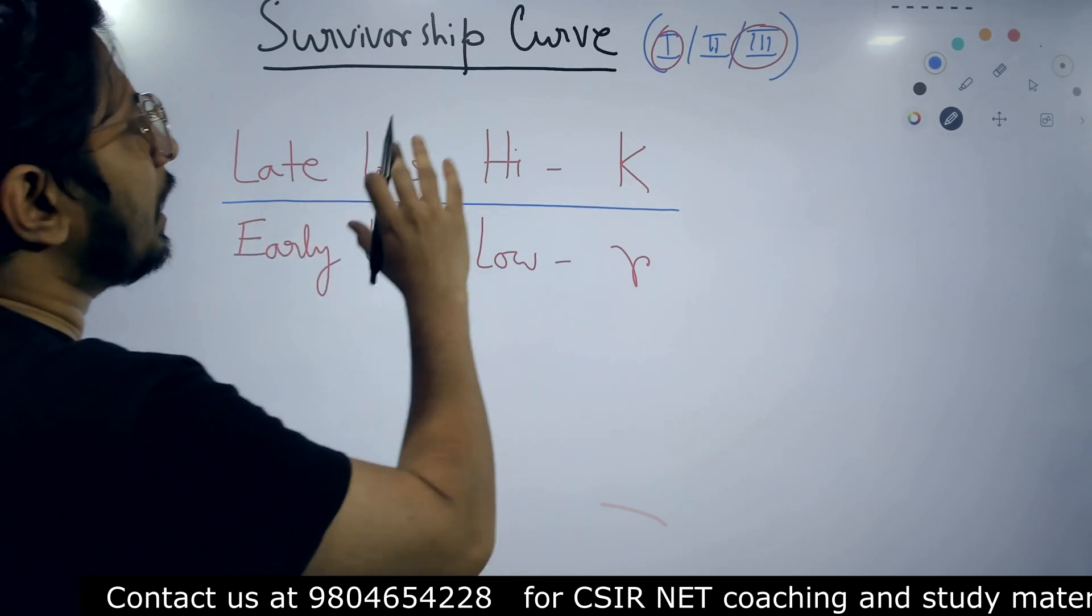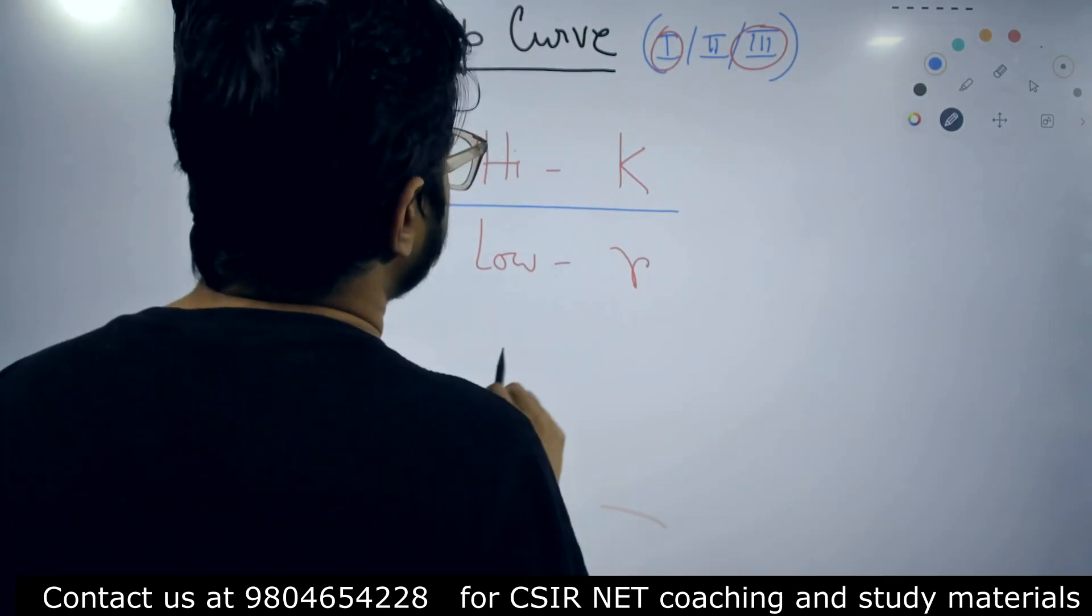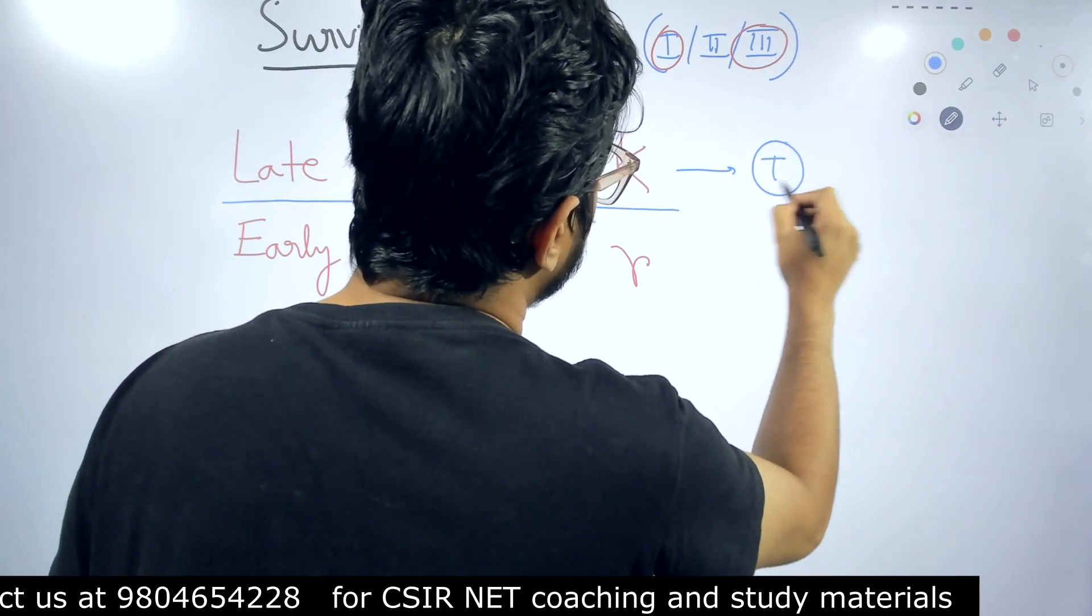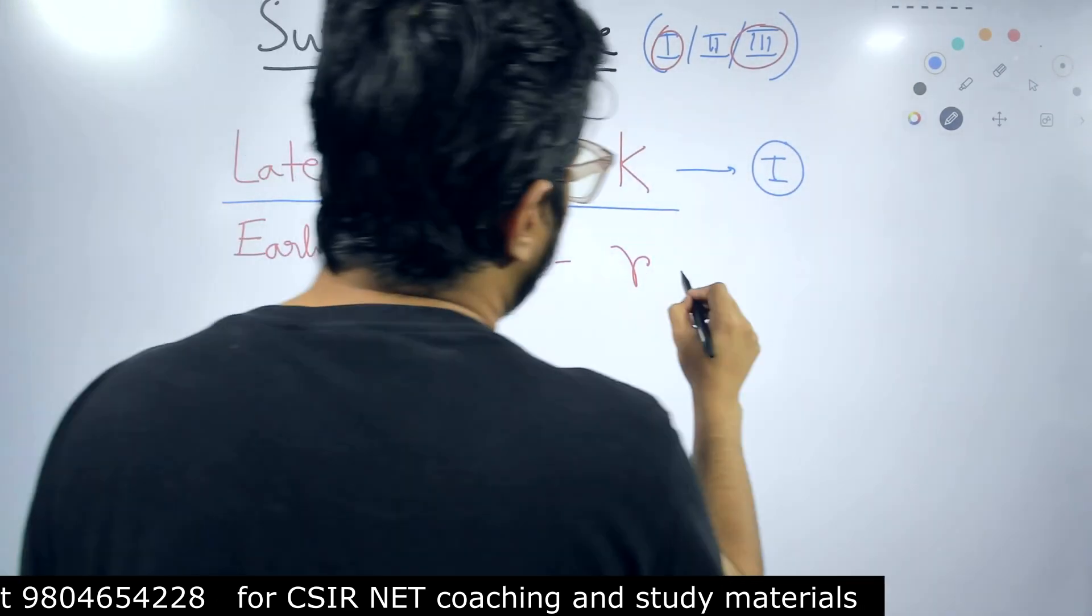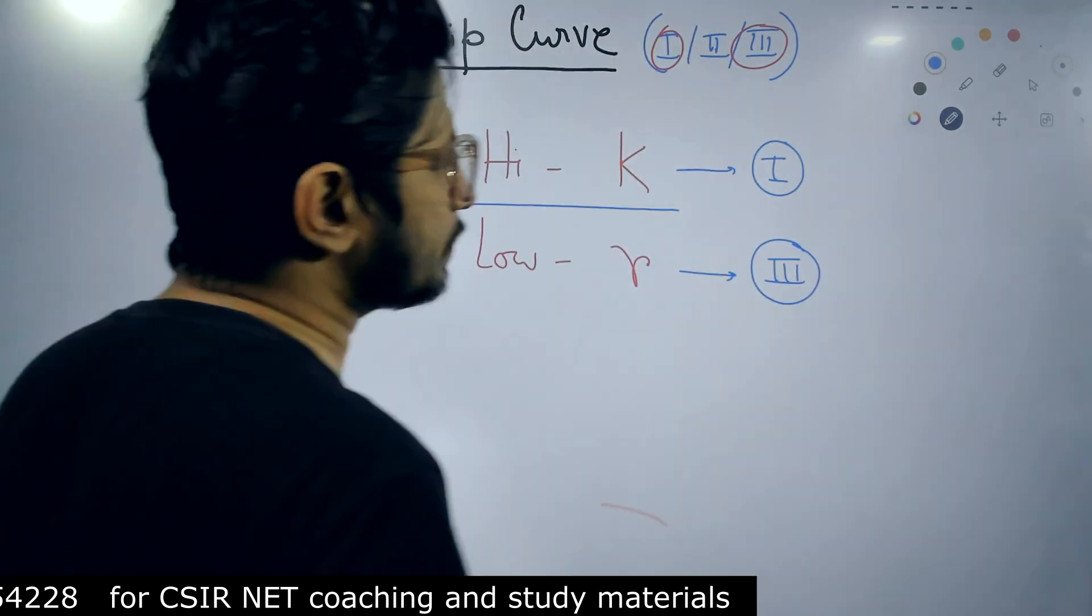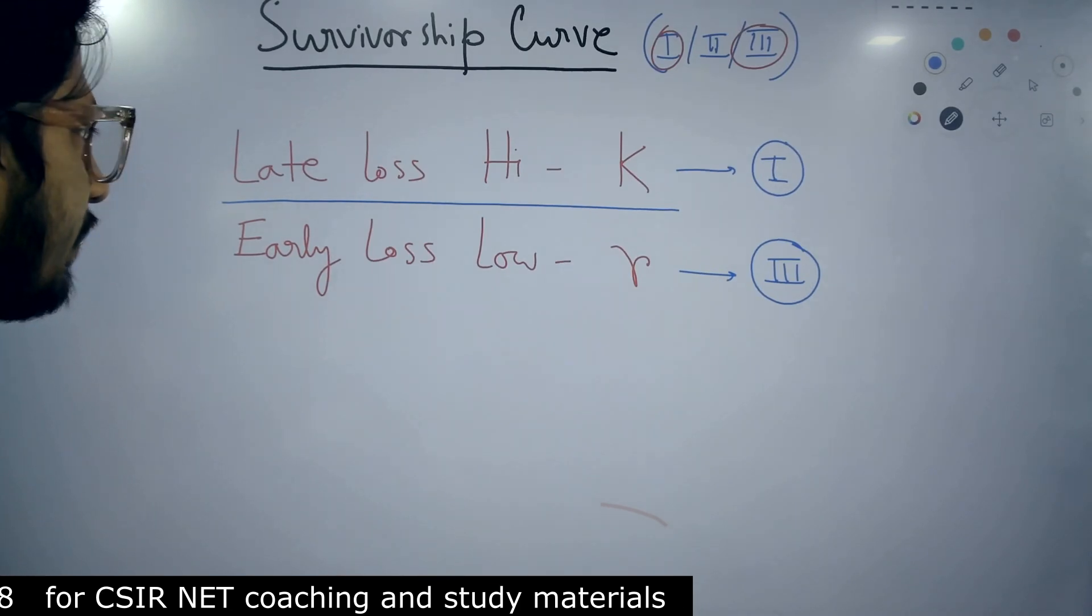Late loss, high, and then K—this is an example of Type 1 survivorship curve. Early loss, low, R—is an example of Type 3 survivorship curve.